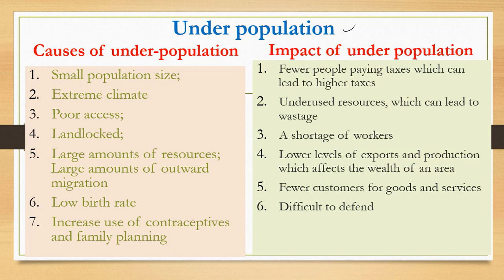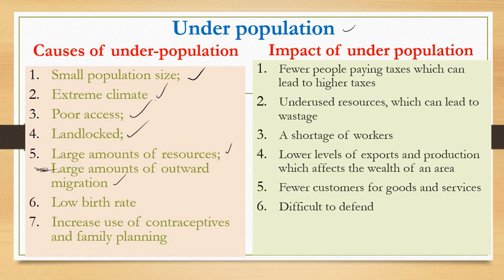Under population is when there are more resources than people. The major causes include: small population size, extreme climates such as desert regions which are usually underpopulated, landlocked regions with poor access to the sea, large amounts of resources relative to the people, and large amounts of outward migration — meaning many people leave the region for other regions.